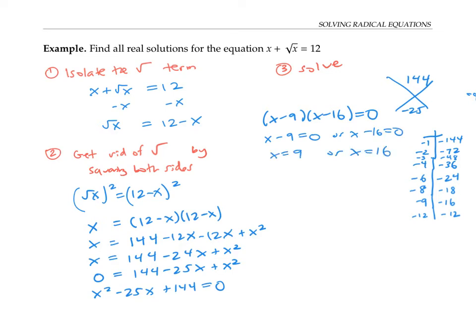I'm almost done, but there's one last very important step: checking the solutions to eliminate any extraneous ones. An extraneous solution is one that does not actually satisfy the original equation, and extraneous solutions can happen when solving equations with radicals.